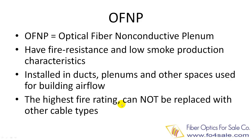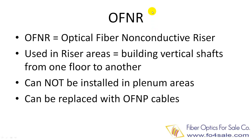OFNP cables are the only type of cables that can be installed in the plenum area for HVAC air return. This is the highest fire rating cable — no other types can be used as a substitute for OFNP cables. The second type of fiber cable rating is called OFNR. N still stands for non-conductive, and R stands for riser rated. OFNR cables are used for riser areas, such as vertical shafts or runs from one floor to another. OFNR cables cannot be installed in plenum areas, but OFNP plenum rated cables can be used as a substitute for OFNR cables.